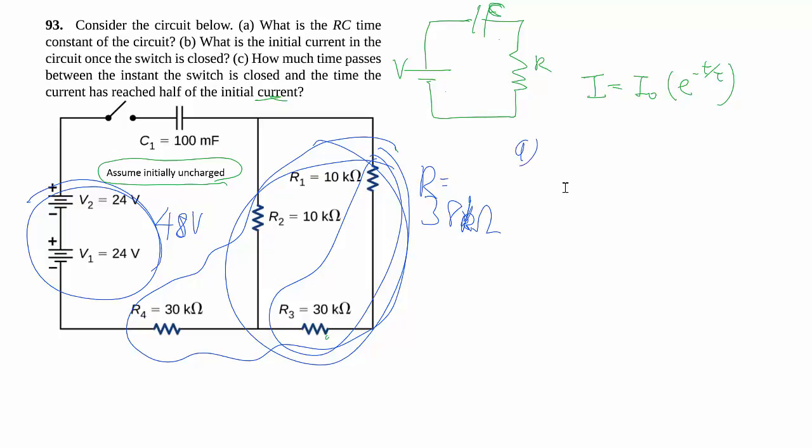So the rest of the problem becomes fairly straightforward. Tau is just R times C. We have our R, 38 kiloohms. Our C, which is 100 millifarad. Fairly big capacitor by the way. And the math gives us 3800 seconds. A little more than an hour because the capacitor is so big.